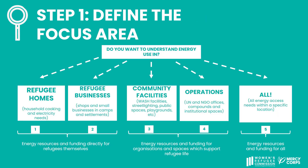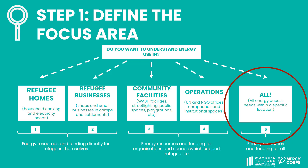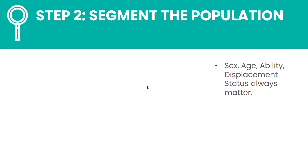What does step one entail — defining the focus area? The mandate and focus of your institution or your project will guide this decision. For example, a food security and livelihoods project may focus on energy needs in homes and businesses, whereas WASH or camp management-focused agencies may focus on community-wide energy needs. Energy-focused actors may look holistically at all energy needs in a given area. Once your focus area is clear, you will define who the distinct energy users are, as energy needs and priorities always vary depending on an individual's identity. We know that sex, age, ability, and displacement status always matter.